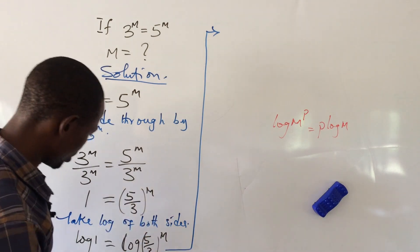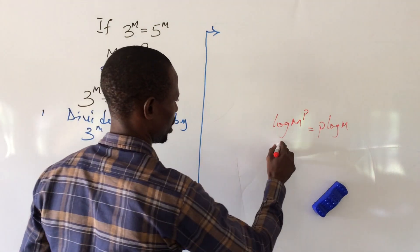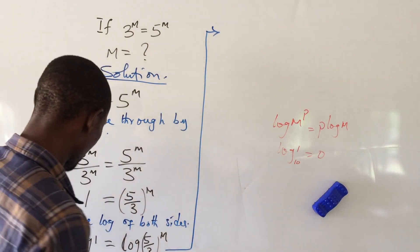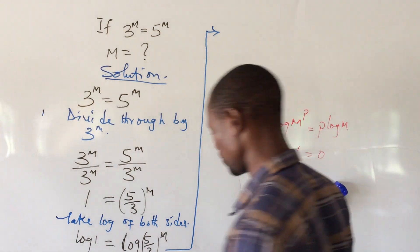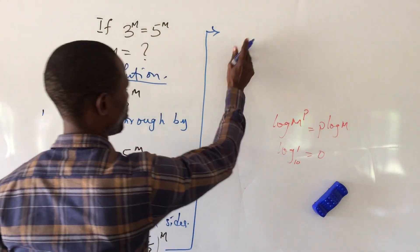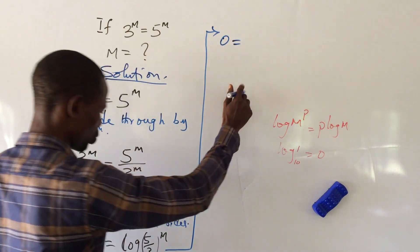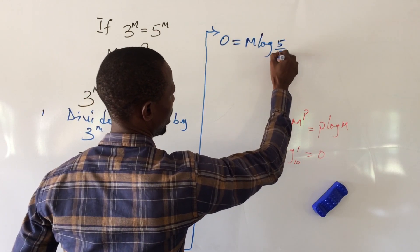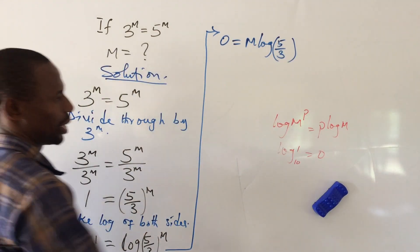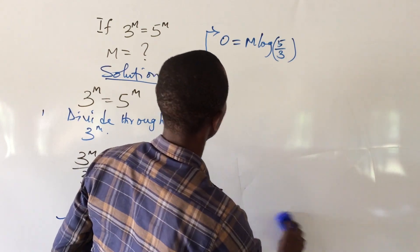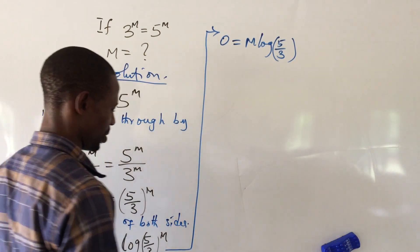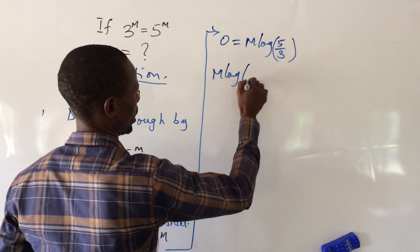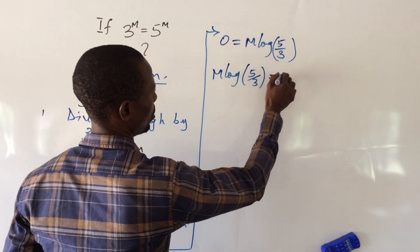There is another law which says that log 1 to any base is equal to 0. So log 1 gives us 0. Applying both laws, we now have 0 on the left side equal to m times log of (5 over 3). Rearranging, this gives us m times log(5 over 3) equal to 0.